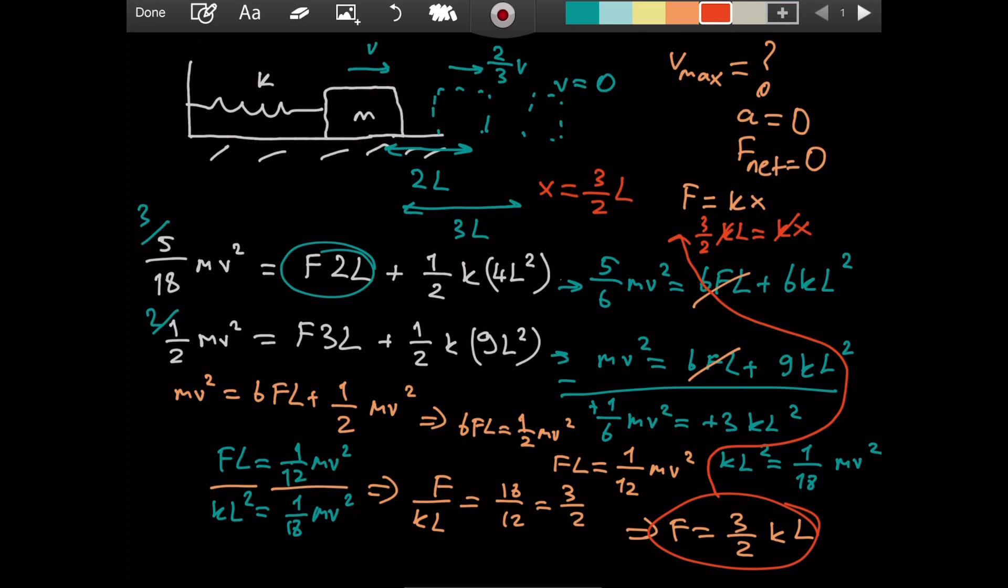So V max occurs when X is equal to 3 over 2 L. So when the spring is stretched a distance of 3 over 2 L from its natural length, when that happens, the velocity is at a maximum. So let's just consider that case. Let's write the energy formulas for that case.